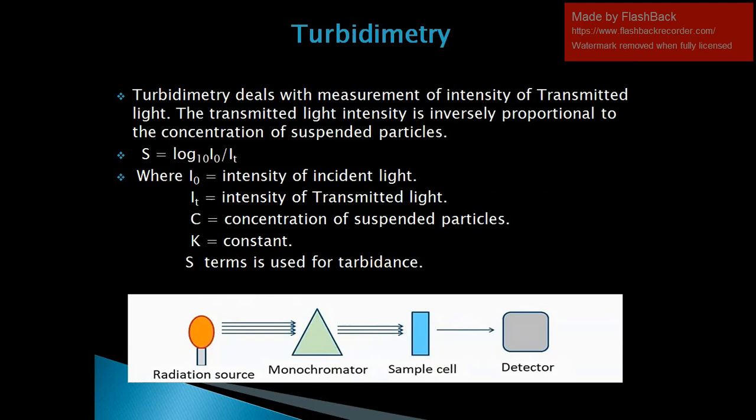Turbidimetry deals with the measurement of intensity of transmitted light. The transmitted light intensity is inversely proportional to the concentration of suspended particles. If the concentration of suspended particles increases, transmission of light will decrease. The equation for turbidimetry is: S = log₁₀(I₀/I_T), where I₀ is the intensity of incident light, I_T is the intensity of transmitted light, C is the concentration of suspended particles, K is a constant, and S is turbulence.